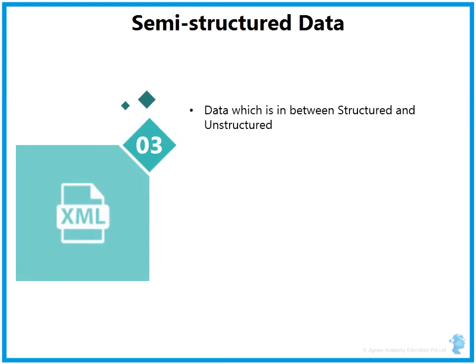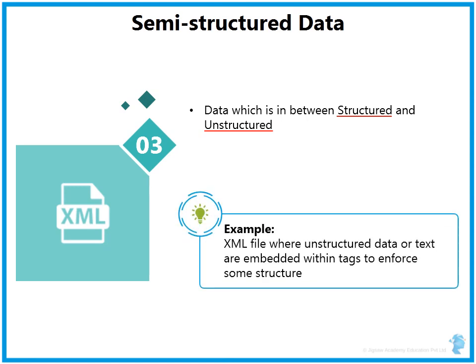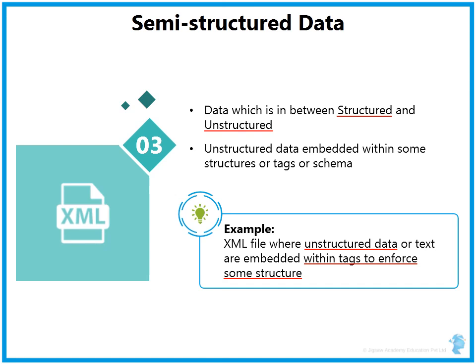Semi-structured data sits somewhere between structured and unstructured data. The best example is an XML file, which contains several tags that impose a basic skeletal framework on the data. However, the data embedded between the tags is itself unstructured. So semi-structured data is unstructured data fitted into a loose schema — you give it a framework from an external perspective, but a fine granular analysis reveals it is still unstructured data enclosed within a schema.